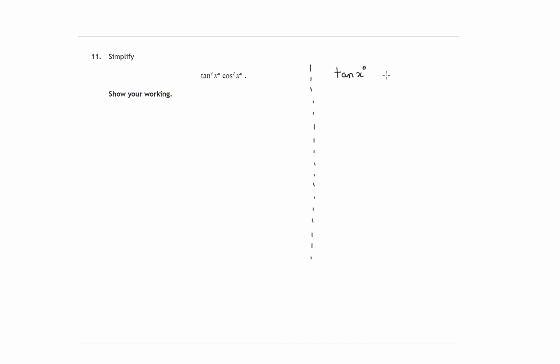When you're doing these simplification questions, tan x is the same as sin x over cos x, and sin squared x plus cos squared x is equal to one.